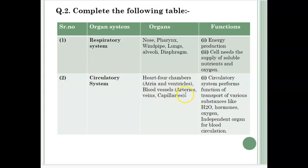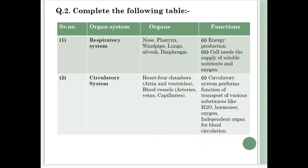Blood vessels: arteries, veins, capillaries. For function, the circulatory system performs the function of transport of various substances like water, hormones, oxygen, and is an independent organ for blood circulation.